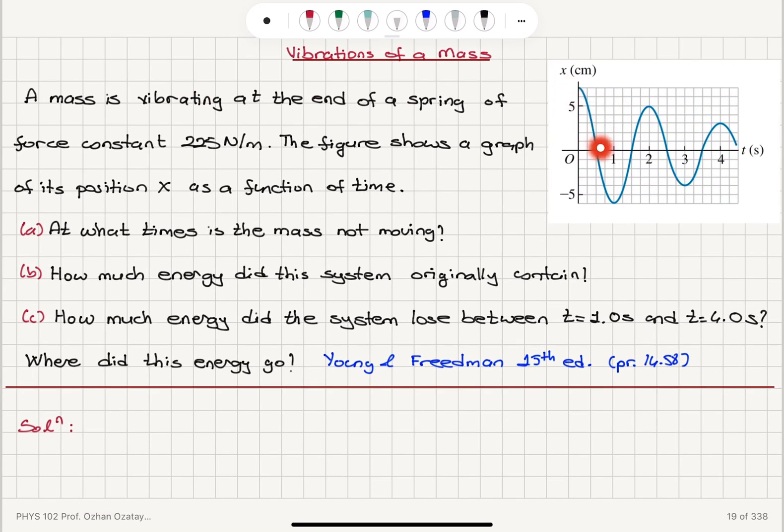Okay, so this is a damped oscillation, obviously. Part A, at what times is the mass not moving? Part B, how much energy did this system originally contain? Part C, how much energy did this system lose between 1 second and 4 seconds? Where did this energy go?